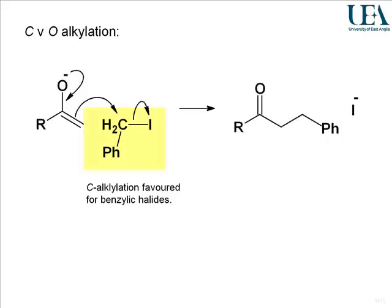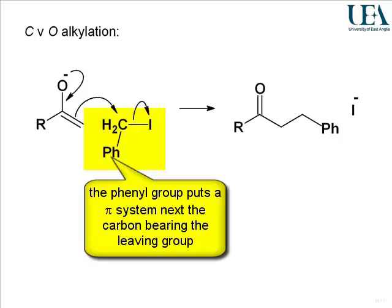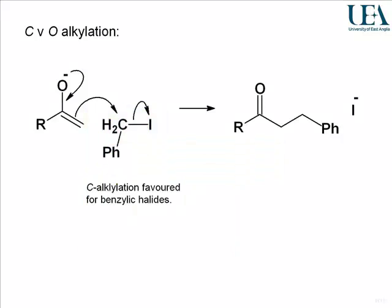There are some reagents which are very good at doing C-alkylation. This is very similar to methyl iodide, but we've got a phenyl group as well as substituents — that molecule is not methyl iodide, it's benzyl iodide. In general, carbon-iodine bonds which are next to pi systems are good at doing C-alkylation. This is one example of a range of similar structures which would be good for making carbon-carbon bonds from enolates.